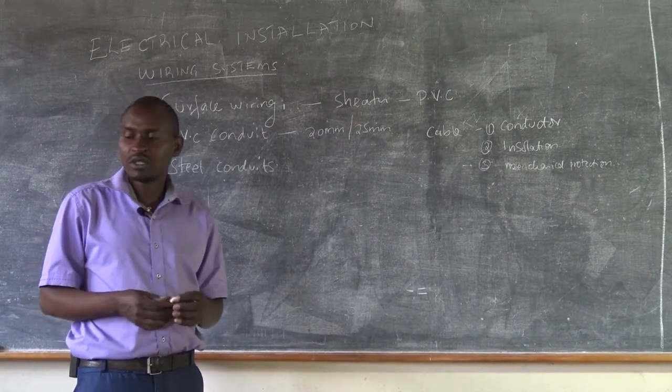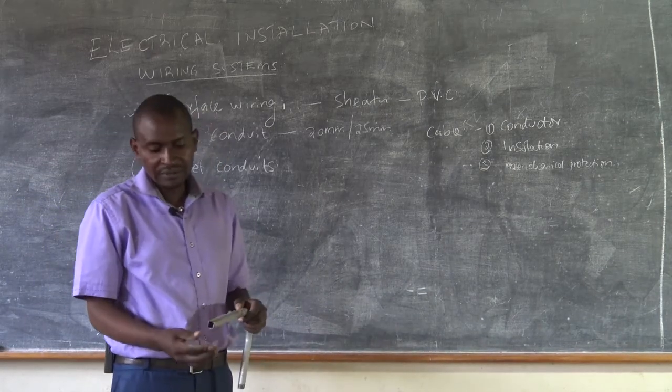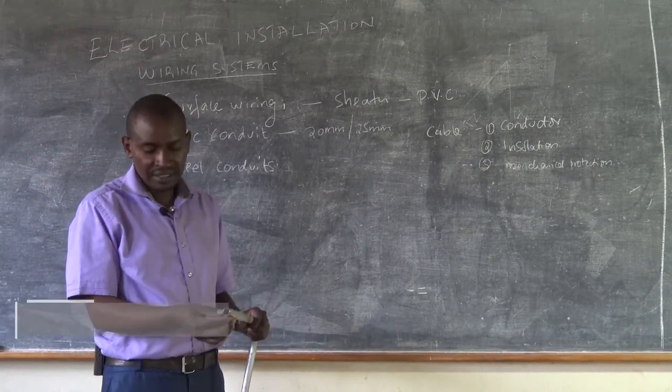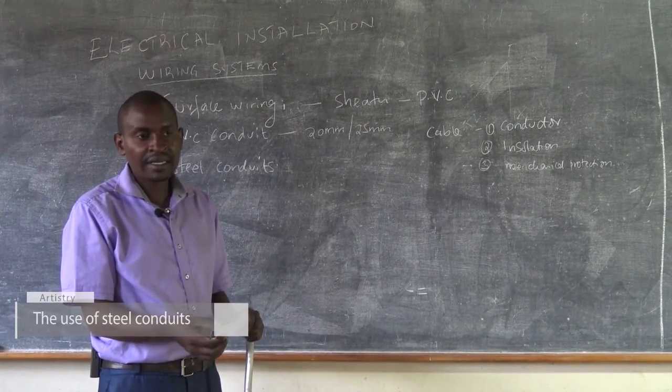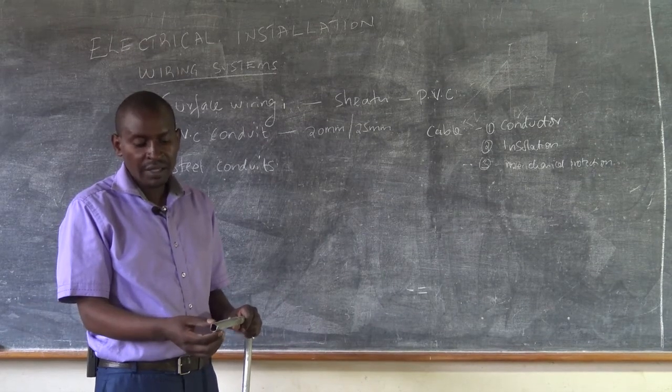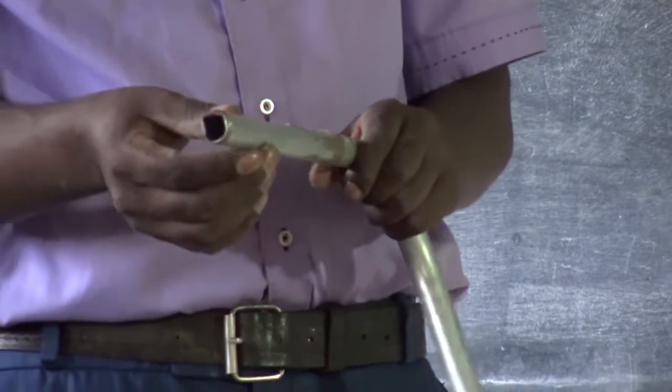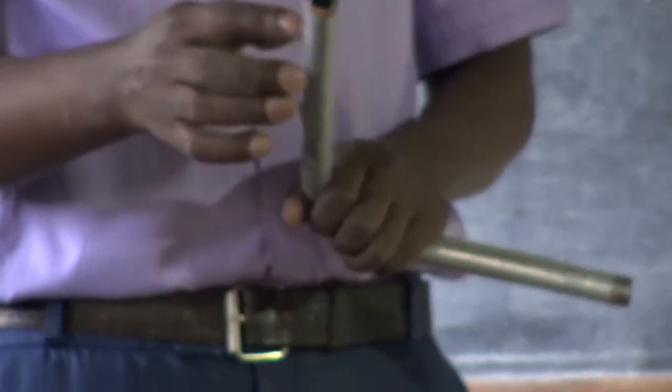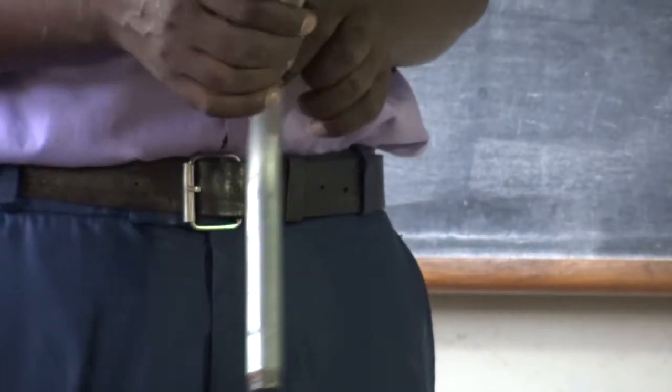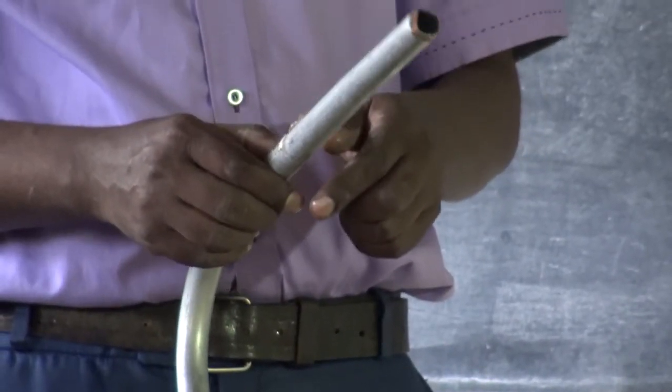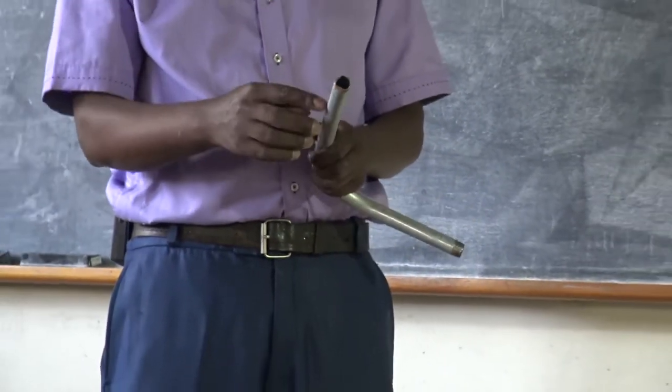A steel conduit looks like this. Just as we had seen in our last session, it is a cylindrical pipe. But now, the earlier one that we had seen was made of PVC. But now this one is made of steel material that is also galvanized. As you can see, it is galvanized, which means that it does not react that much with the atmosphere.